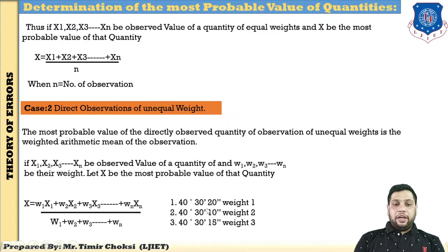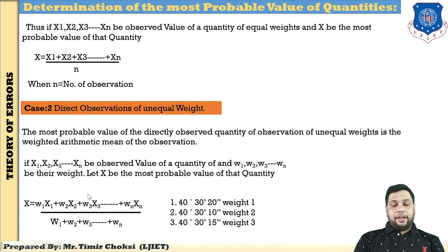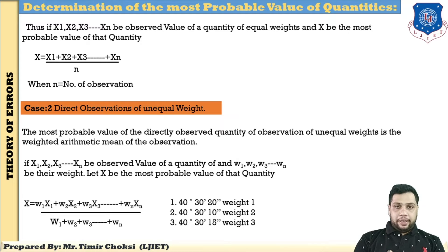For example, a value of 14°30'20" is given with weight 1. Find the most probable value by taking the weighted arithmetic mean: value into weight plus value into weight, all divided by the sum of individual weights.